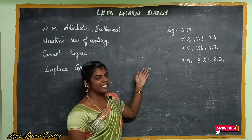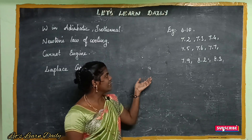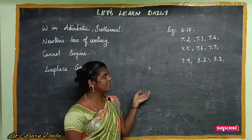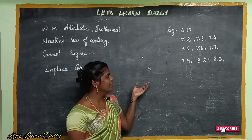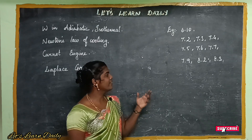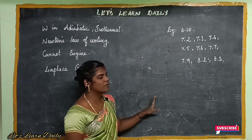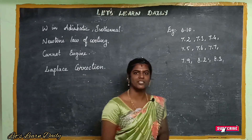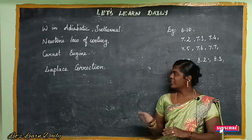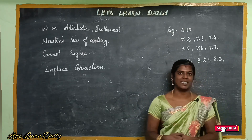For example, problem 6.10, then from the seventh lesson: 7.2, 7.3, 7.4, 7.5, 7.6, 7.7, 7.9, and from the eighth lesson: 8.2 and 8.3. We will talk about the sum and some of the questions. Thank you.